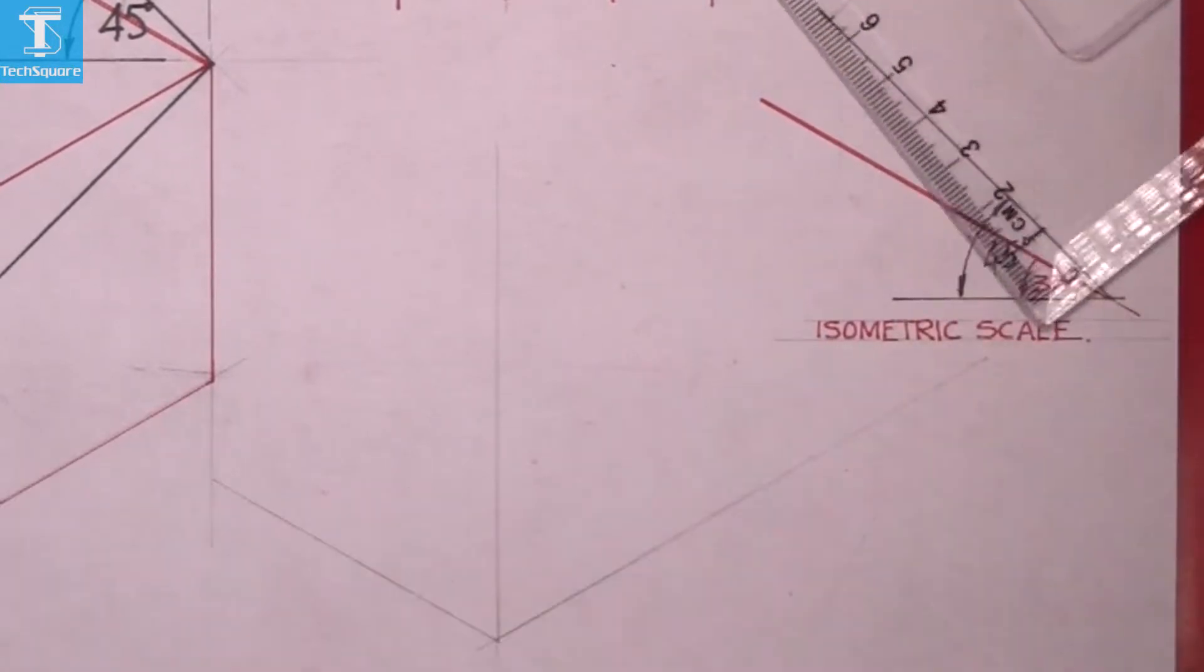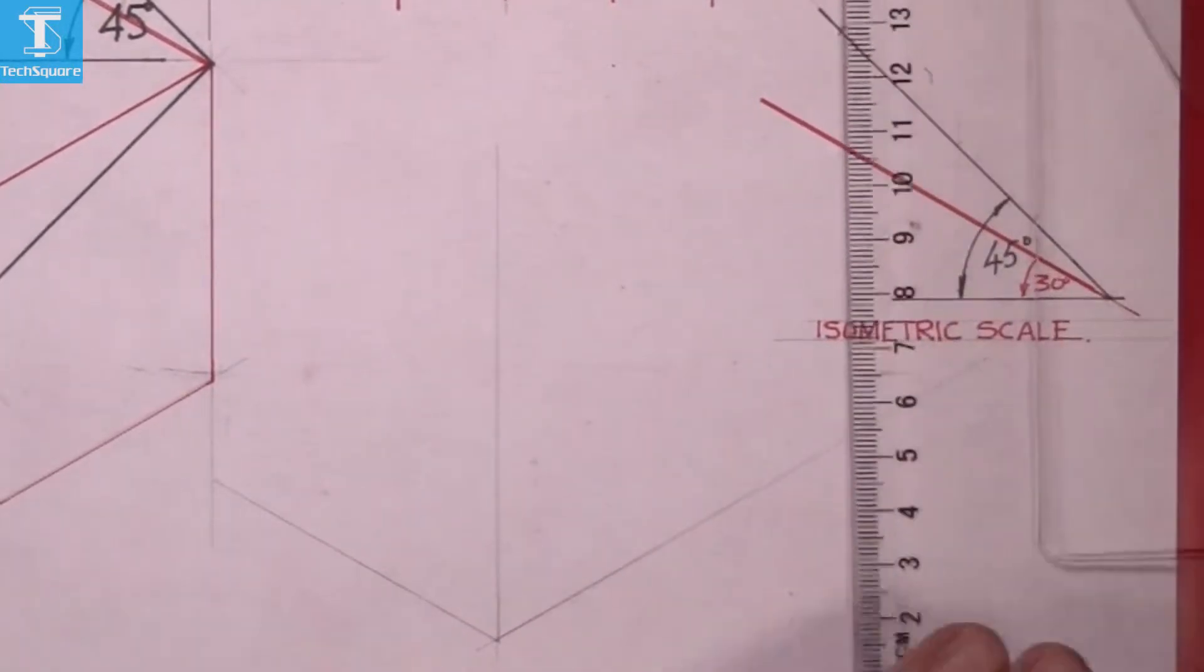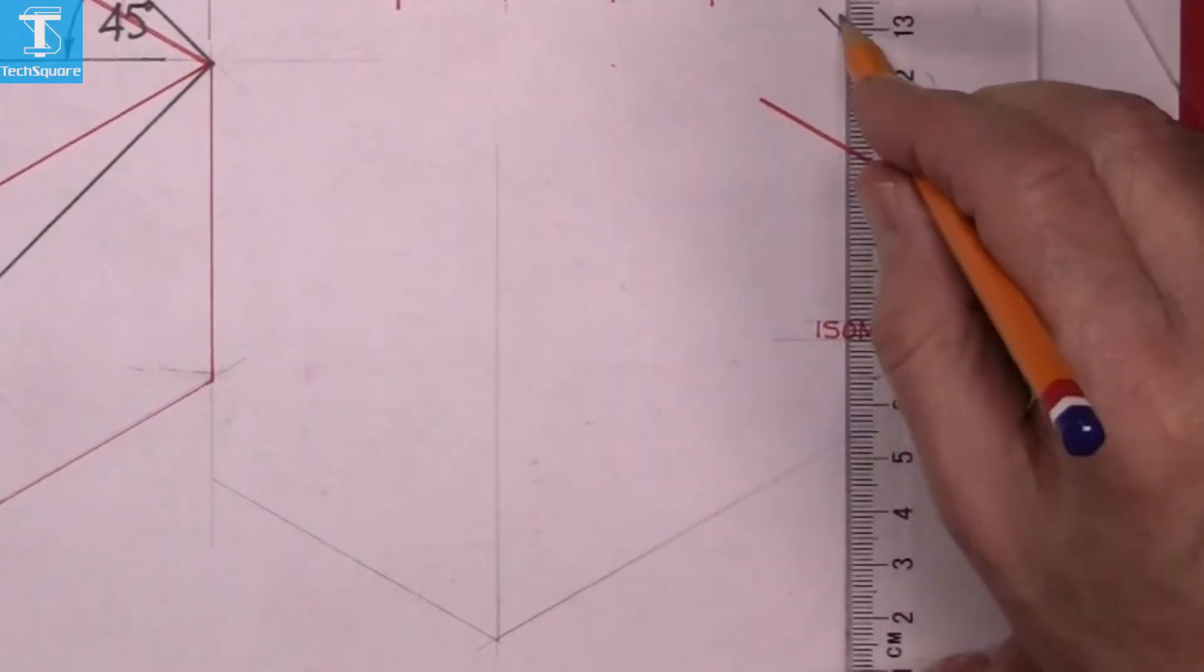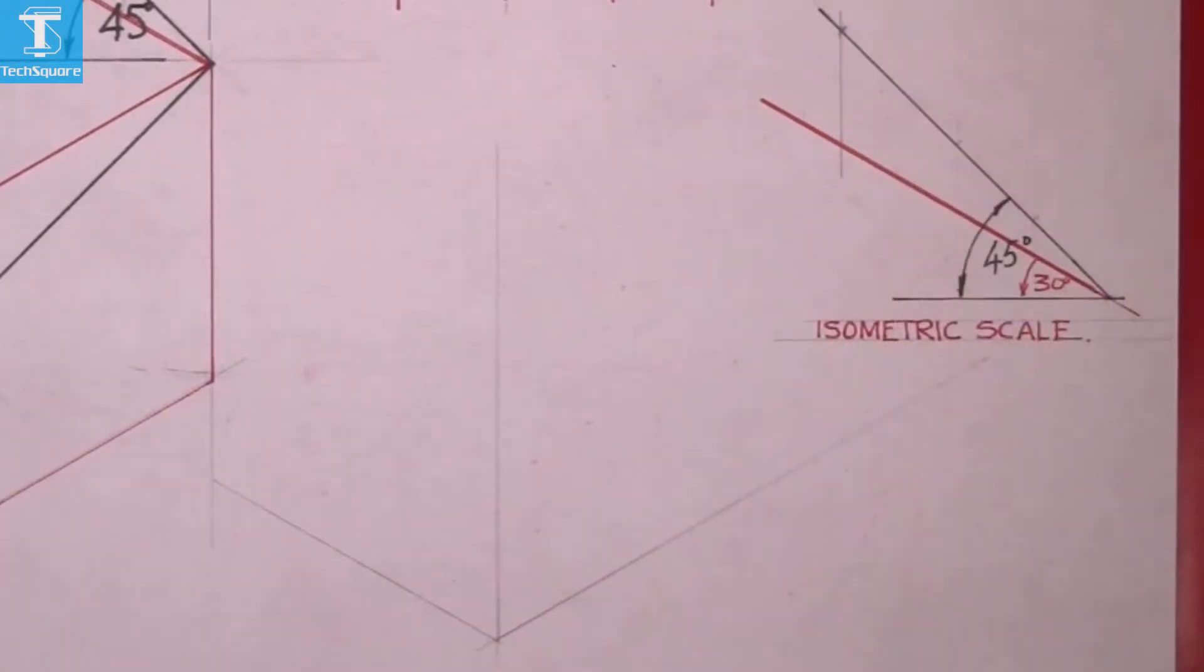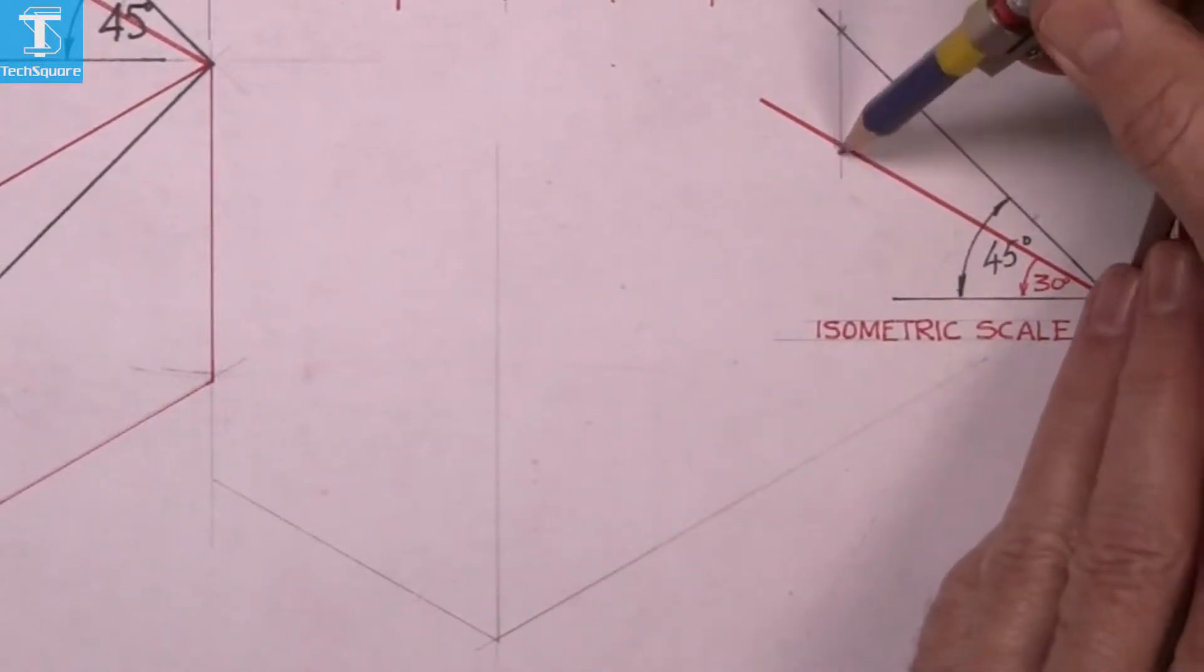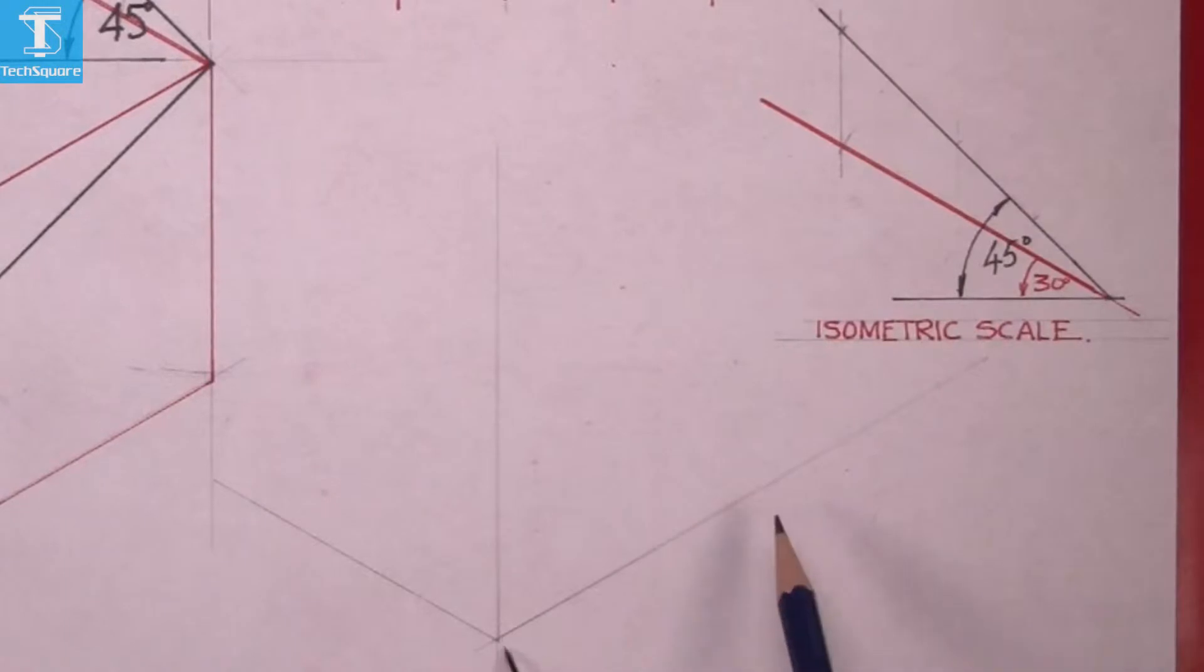And draw vertically down to the red line or the 30 degree line. And now set the compass to the length of that red line and mark it off along the front of the building there. And that's the end of the house there.